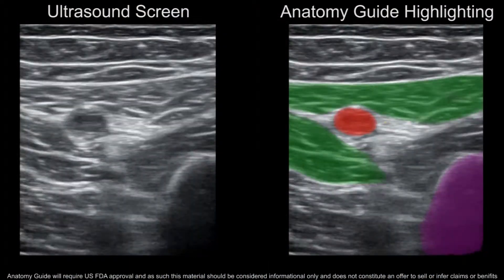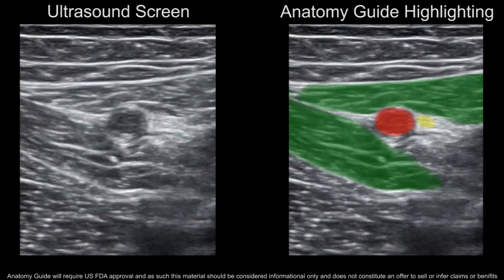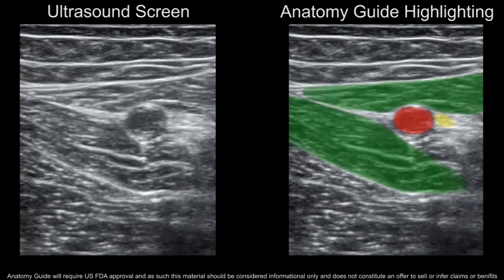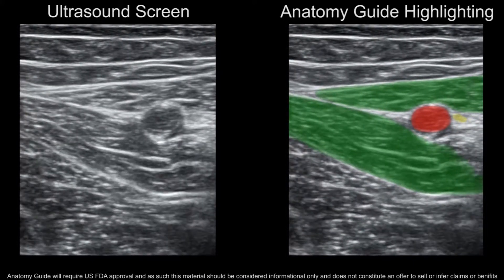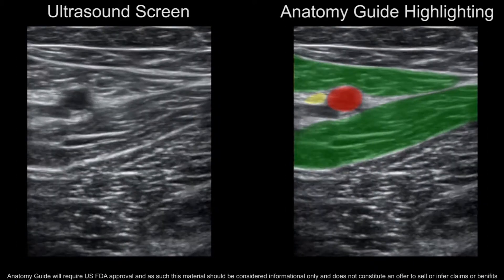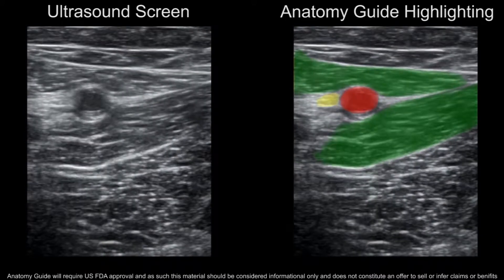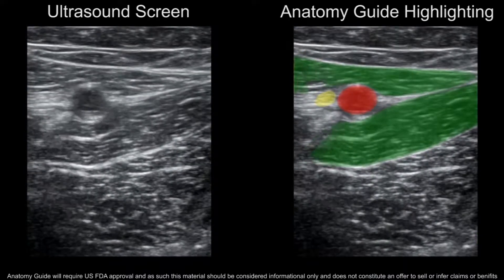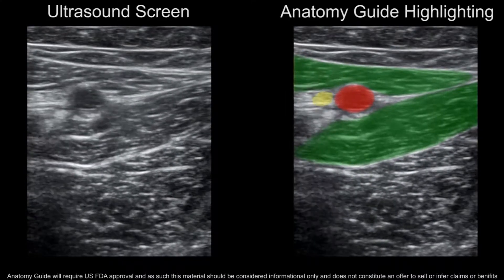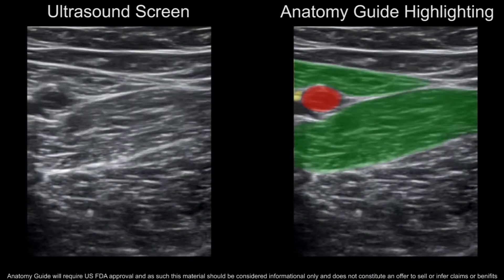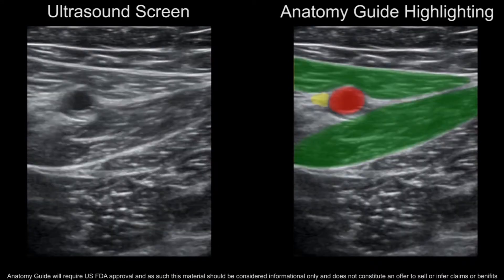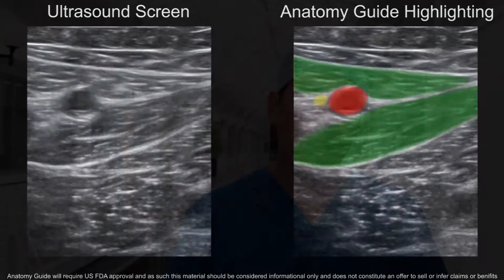Can you explain what Anatomy Guide is and how it will help? Anatomy Guide is a very clever piece of technology which relays an overlay of anatomy onto your ultrasound screen. When I am there, I am pointing out the different bits of anatomy that they need to avoid or the different bits of anatomy they need to get their needle to. Anatomy Guide, by overlaying this colour overlay, enables them to be able to see that without me being there.